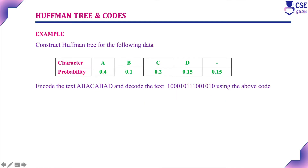This is the given problem: construct Huffman tree for the following data. Character and probability is given — for character A: 0.4, B: 0.1, C: 0.2, D: 0.15, and underscore: 0.15.